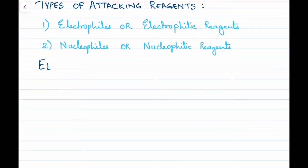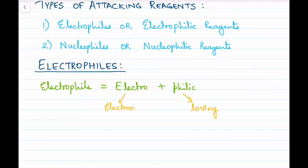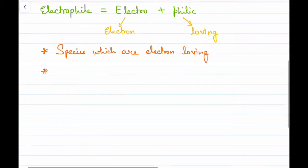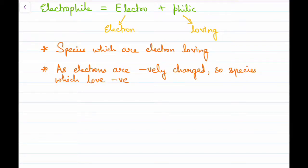Now that we are covering electrophiles, let us understand what an electrophile means. The word electrophile can be broken down into two parts: 'electro' and 'philic.' Electro refers to electrons and philic refers to loving. That means any species which is electron-loving will be an electrophile. As electrons are negatively charged, a species which loves negative charge will either be positively charged or neutral.